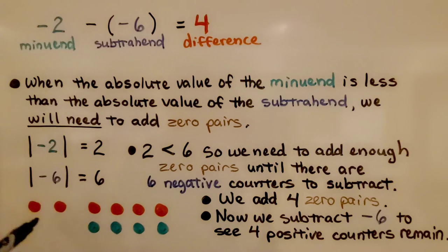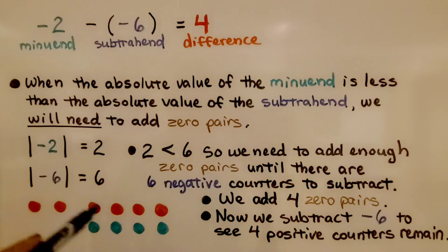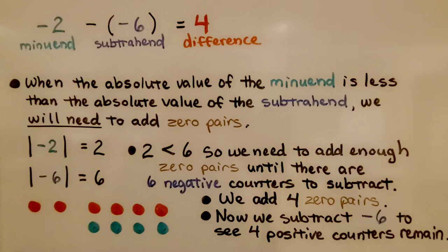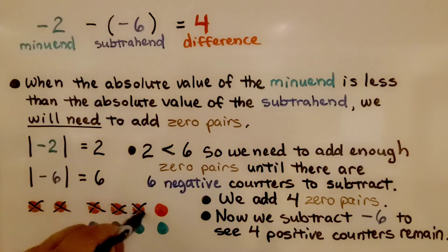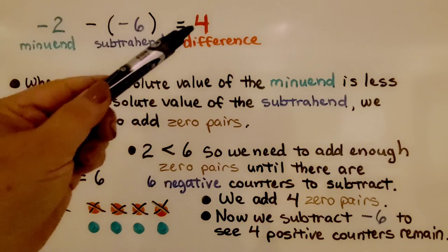We have two negatives and need to take away six negatives, so we add four zero pairs so there will be a total of six negatives. We don't add six zero pairs — we add four zero pairs so there's a total of six negatives. Now we subtract the six negatives, and four positive counters remain. Negative two minus negative six is equal to four.